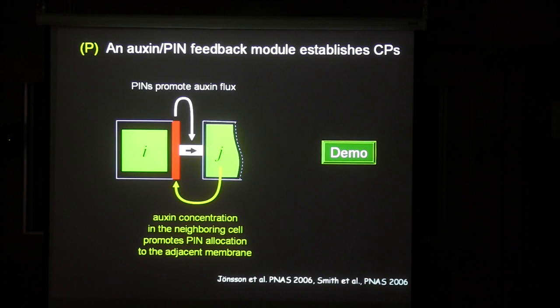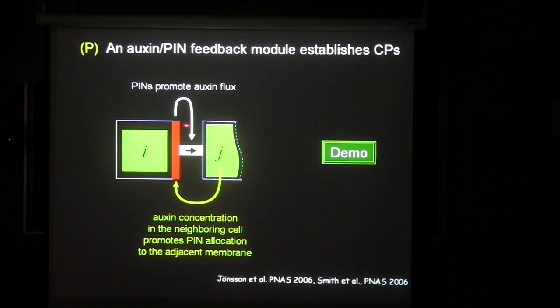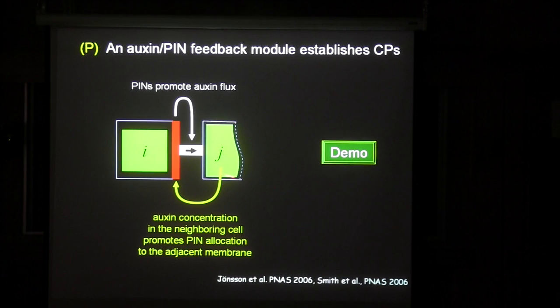In 2006, my student Ivery Smith and also Henry Johnson, who was then a postdoc at the University of California Irvine in collaboration with Caltech, came up with the same idea of polarization: that PINs, which are transporters of auxin, are localized in a polar way to some membranes. They postulated that PINs orient themselves towards neighboring cells with the highest concentration of auxin. The question is: can this kind of feedback create a pattern?